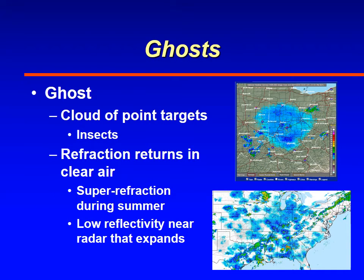Ghosts are point targets — sometimes insects — but more commonly seen as a result of refraction of radar beams in clear air. A ghost is a very weak radar return extending out from the radar perhaps about 10 miles. When you have strong inversions during summer evenings as the ground cools off, the radar beam refracts off that temperature inversion and returns a weak signal. You'll see a blue haze around radars all across the United States — that's what ghosts are.